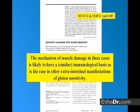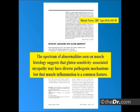The mechanism of muscle damage in these cases is likely to have a similar immunological basis as is the case in other extra-intestinal manifestations of gluten sensitivity. And look at the title of this one: 'Myopathy Associated with Gluten Sensitivity, Not Associated with Celiac Disease.' The spectrum of abnormalities seen on muscle histology suggests that gluten sensitivity associated myopathy may have diverse pathogenic mechanisms, but that muscle inflammation is a common feature.